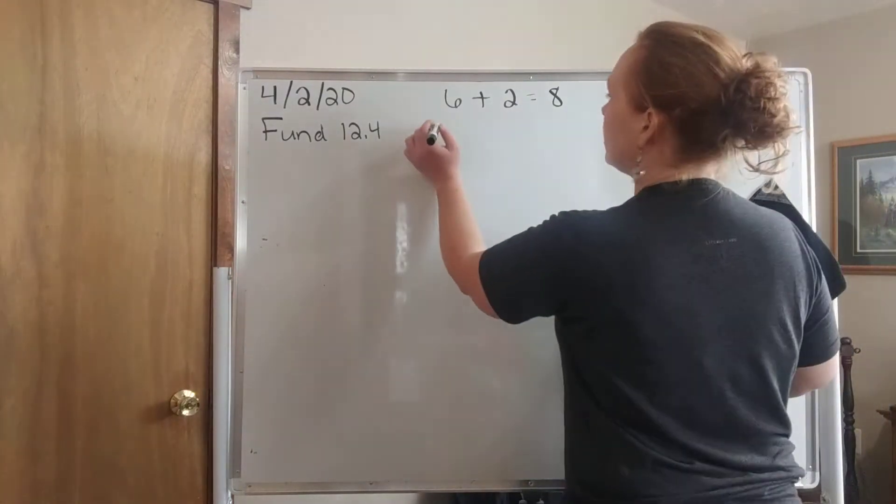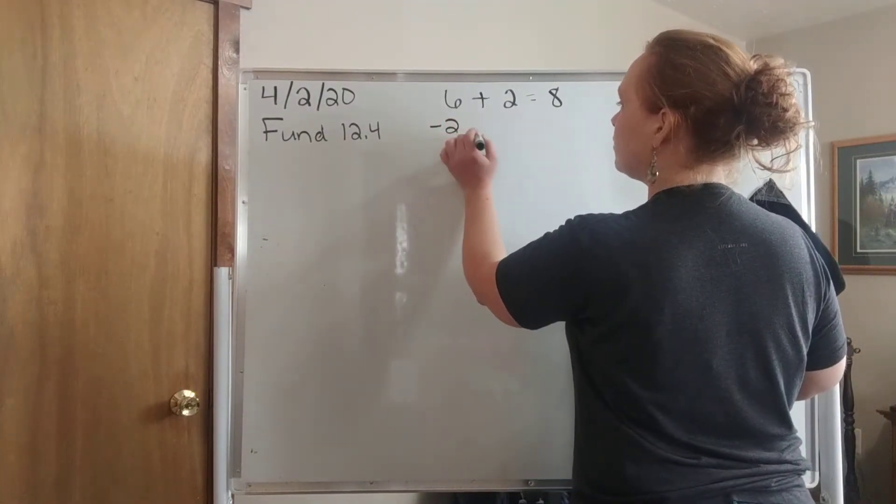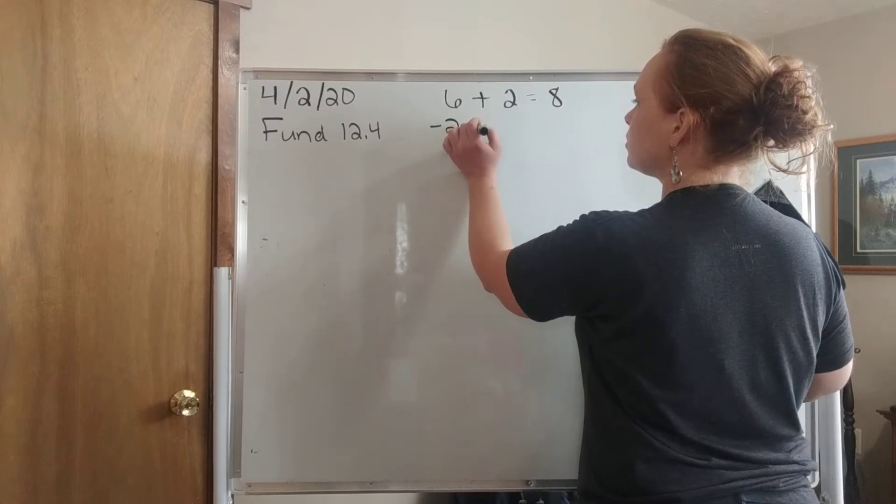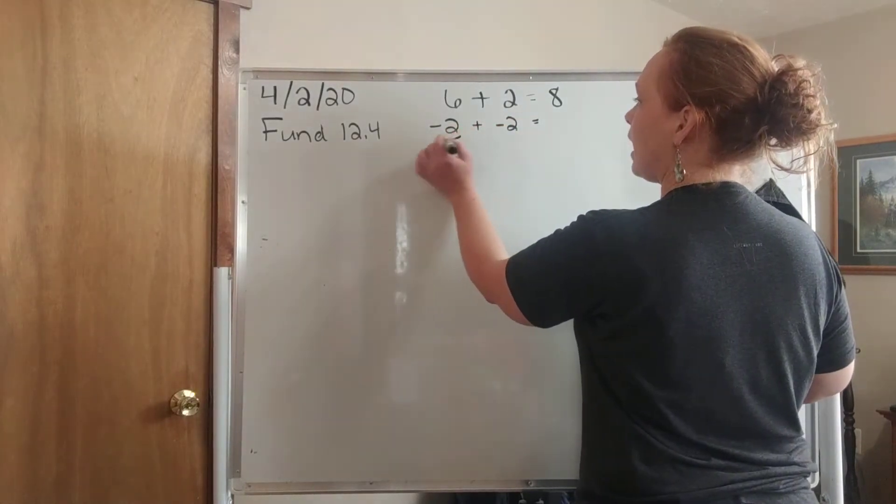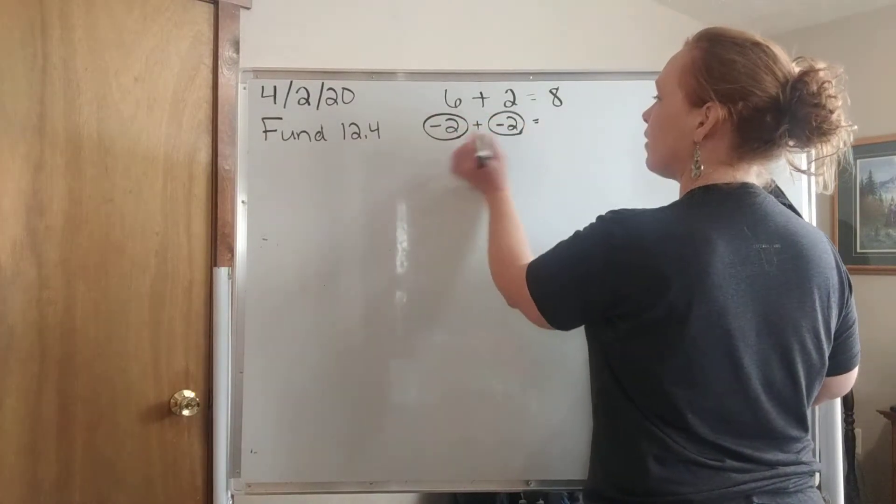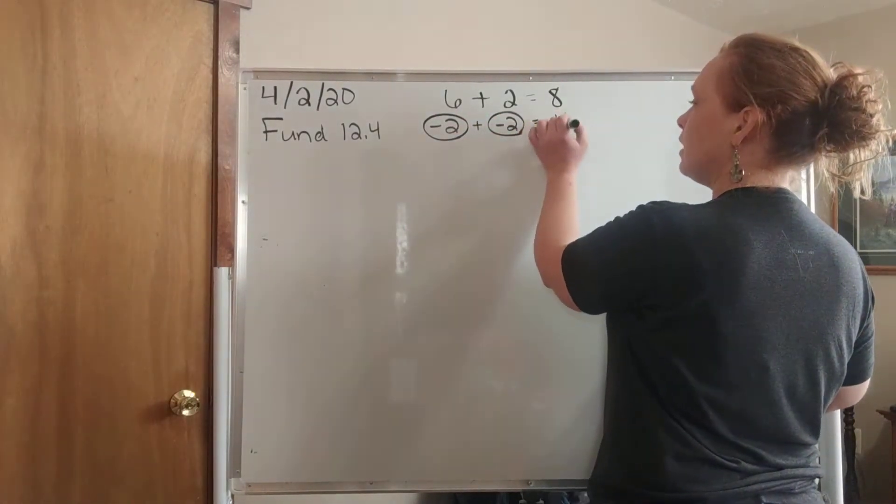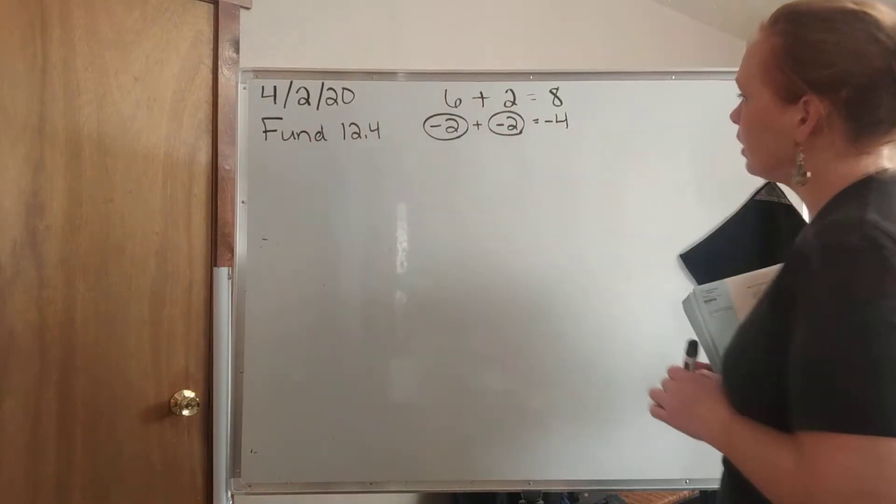And then we talked about if I add two negative numbers and they have the same sign, so I add them together and I keep the sign, negative 4.